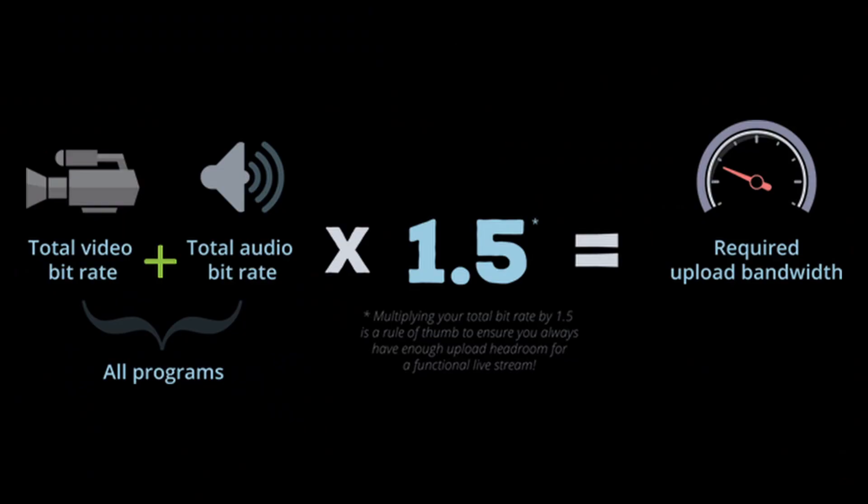Next, you're going to want to plug these numbers into a simple formula. Add your video and audio bit rates and multiply that by 1.5 — the result is how much upload bandwidth you'll need for smooth streaming. If you're sending your stream to more than one destination, remember to add the bit rate of any other parallel programs to the calculation.